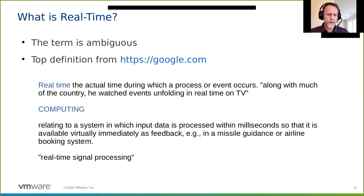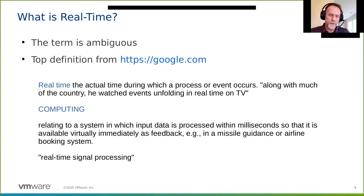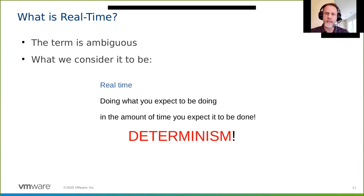For this talk and for what PREEMPT_RT is, real-time basically means doing what you expect to be doing in the amount of time you expect it to be done. What does that mean? Determinism. I've always hated the term 'real-time operating system' because of this ambiguity. I think it should have been called a 'deterministic operating system'—DOS. This joke never gets old. DOS was actually a very good real-time system: it would always do what you expect it to do.